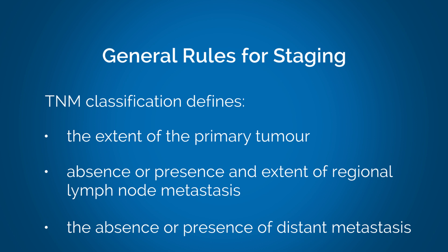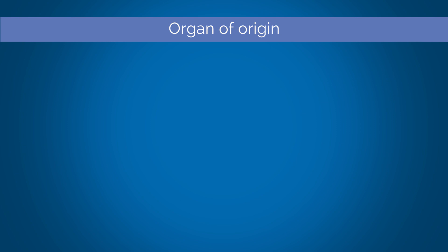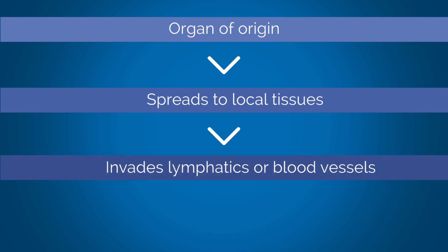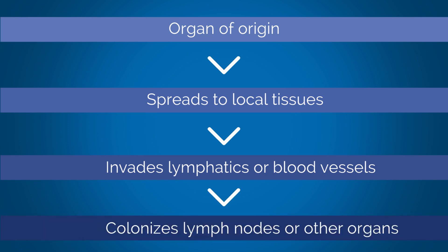This classification follows a sequential process where cancer starts in the organ of origin. For example, breast cancer starts in the breast. It then spreads to local tissues, meaning it can invade the breast tissue, invade lymphatics or blood vessels, then colonize lymph nodes or other organs — for example, the bones, the lung, and the liver.